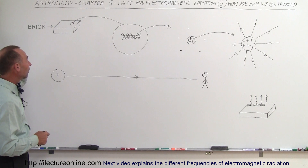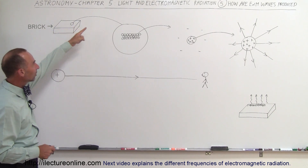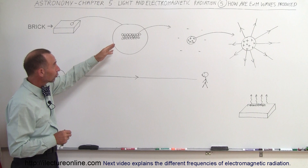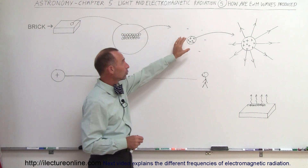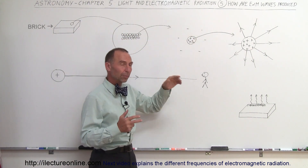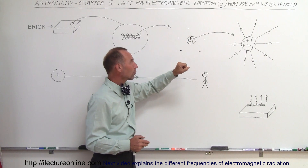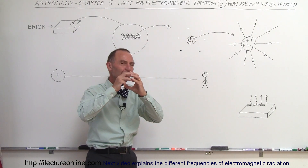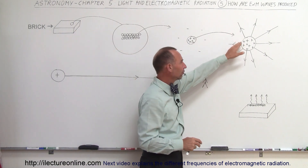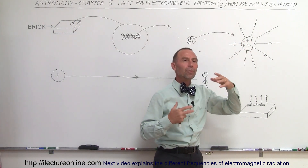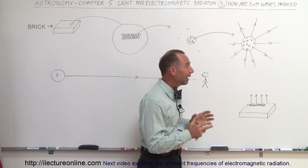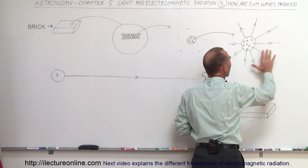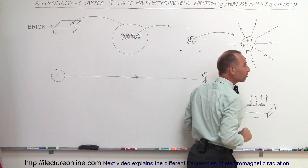Let's take our brick again. When we take a closer look at our brick, we can see that it's made up of atoms. If we take a closer look at an atom, it looks like a nucleus with electrons around it. The nucleus contains protons and neutrons, and the negatively charged electrons are around it. Because of the protons, there will be an electric field that emanates away from the nucleus of the atom.